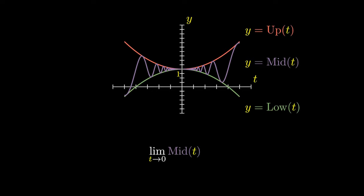From the picture, we see that Low(t) has a y-intercept of 1, likewise for Up(t).